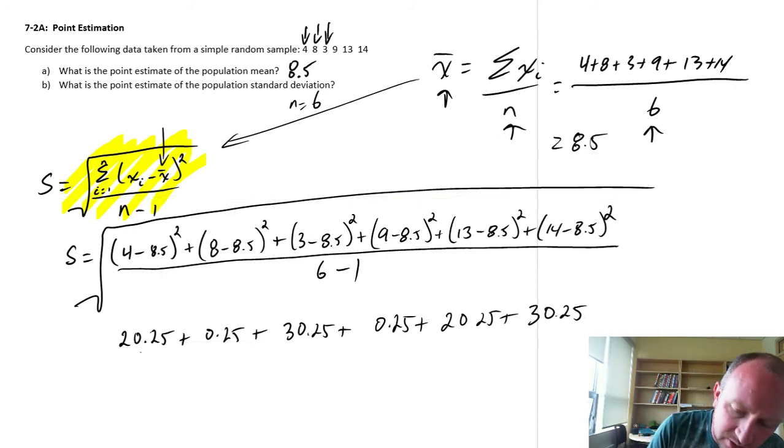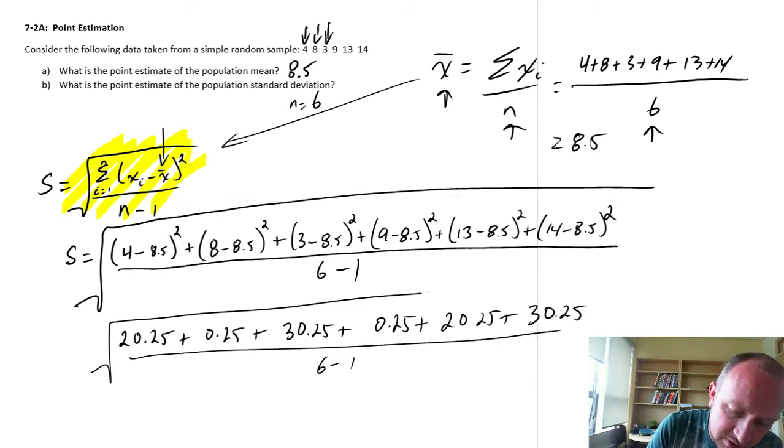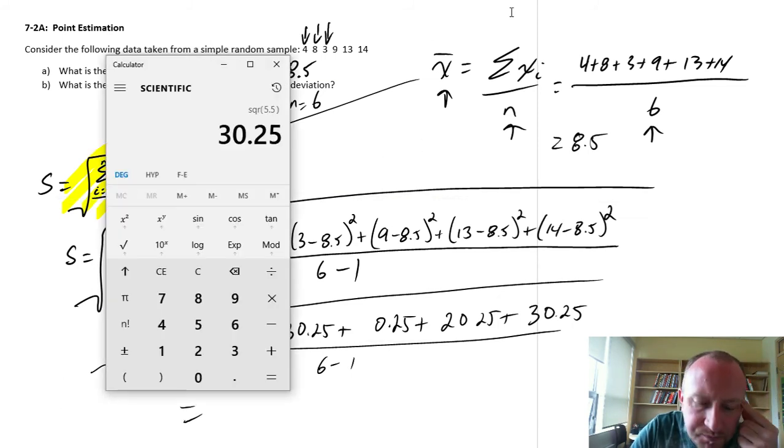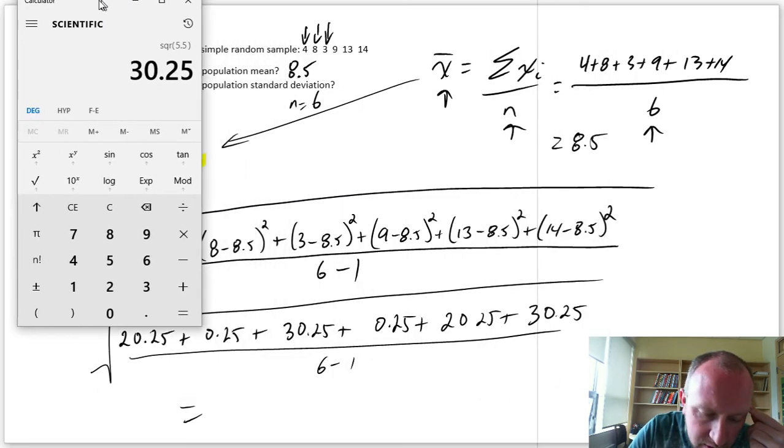We'll add all of those up and we divide by 6 minus 1, and we'll square root all of that. So now here, this is going to be equal to... Where did my calculator go here?